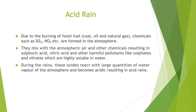Acid rain: due to the burning of fossil fuels such as coal, oil and natural gas, chemicals such as sulfur dioxide and nitrogen dioxide are formed in the atmosphere. They mix with atmospheric air and other chemicals, resulting in sulfuric acid, nitric acid and other harmful pollutants like sulfates and nitrates, which are highly soluble in water.